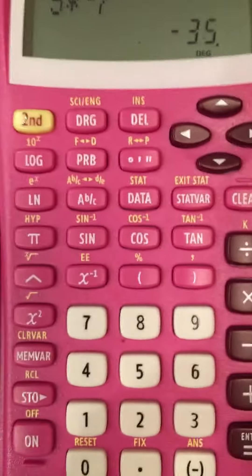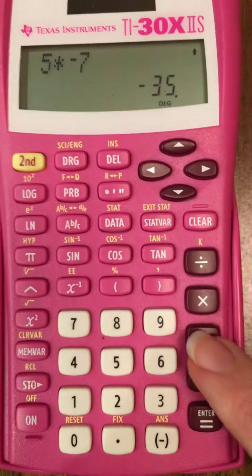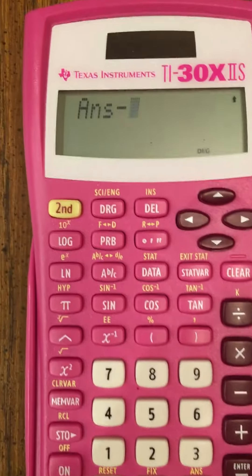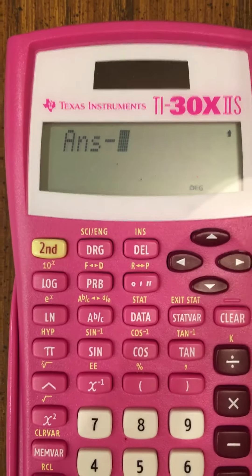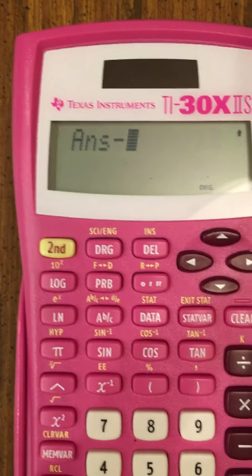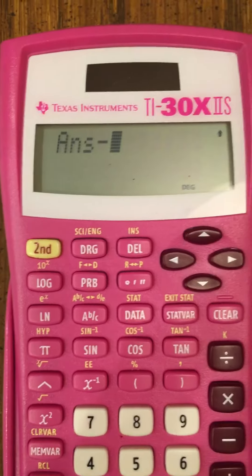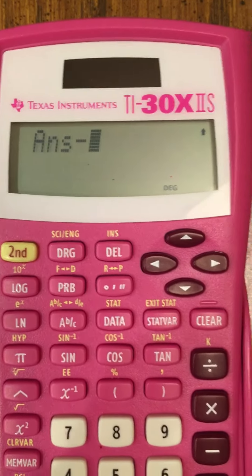So I'm going to hit subtract right here. And do you see where it says ANS? What that's saying is I'm taking the previous answer and I'm going to subtract whatever you put in next.